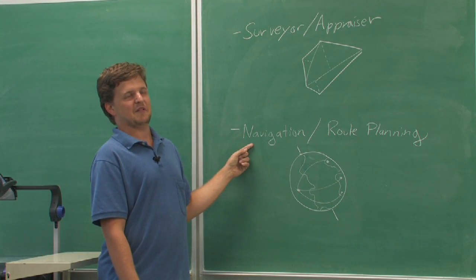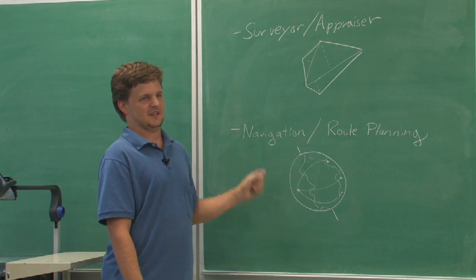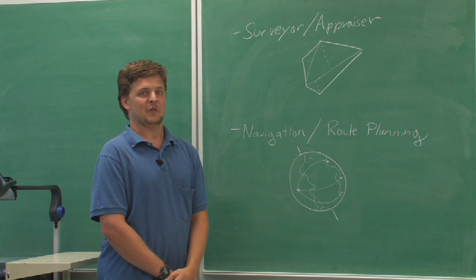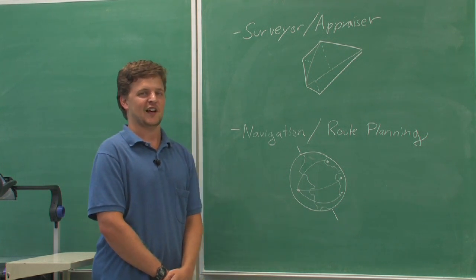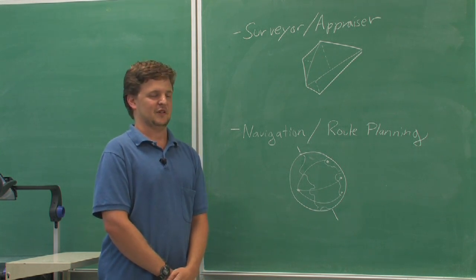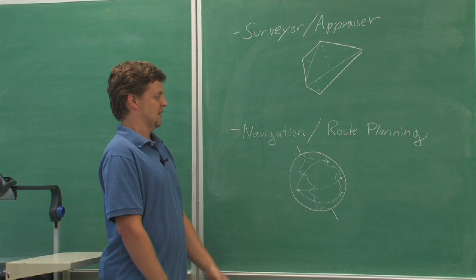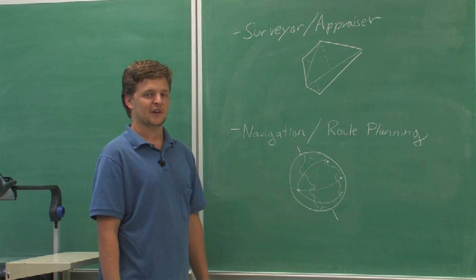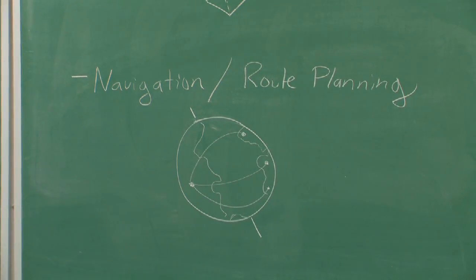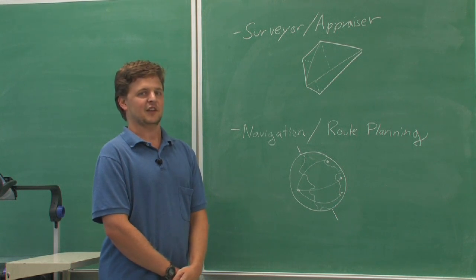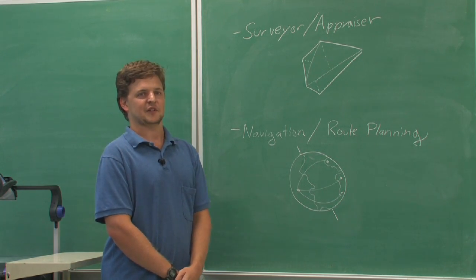Another career would be navigator or route planner. This might be more specifically for an airline or for a company that puts up global positioning satellites or for any sort of planning on land or sea. Interestingly, the shortest route from one point to another on the earth isn't a straight line that we normally think of but a great circle. You might need to be able to calculate some angles in order to make your flight path follow that great circle as closely as possible.